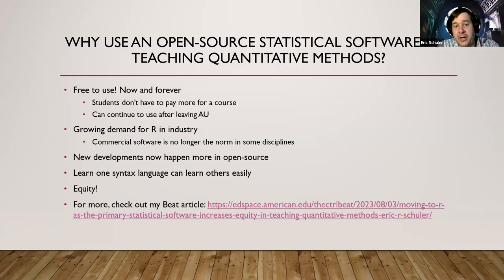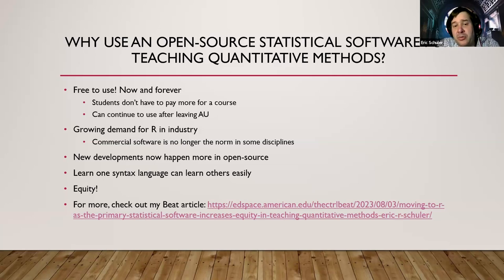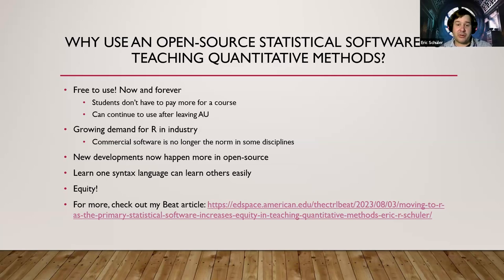There's also growing demand for R and Python in the industry. Commercial software — you still see some SAS and a little Stata every now and then — but primarily, especially within data analyst and data scientist jobs, you're looking at R and Python. And developments in open source happen much quicker. I'm able to jump on R forums with developers, get questions answered, and sometimes that leads to new code being developed. I've done that many times with the Blavaan package. And if you learn one syntax language, you can easily learn others — I initially learned Minitab, SPSS, and SAS, and knowing those made picking up R easy.